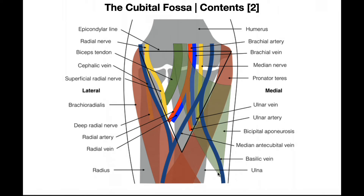This green structure here is the bicipital aponeurosis. The biceps brachii has two tendons: the proper tendon in the deep layer, and the bicipital aponeurosis — a thicker aponeurotic tendon that wraps around and inserts on the ulna. Most people assume biceps brachii just inserts on the radius, and it does, but through the bicipital aponeurosis it also inserts on the ulna. This makes elbow flexion more stable, pulling on both bones of the forearm rather than just the radius.